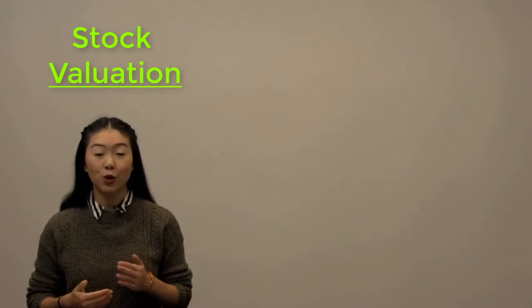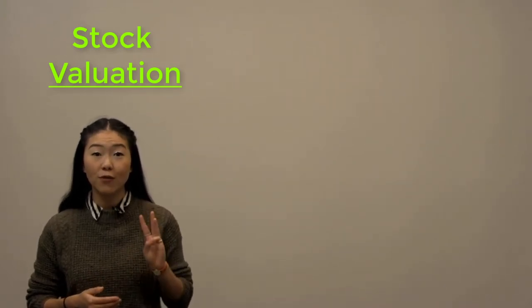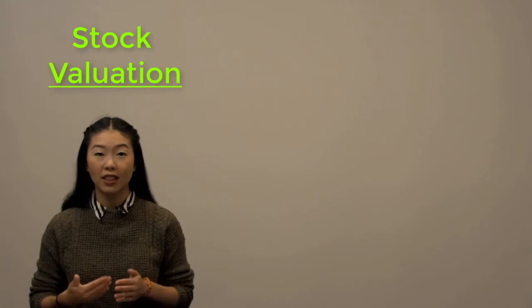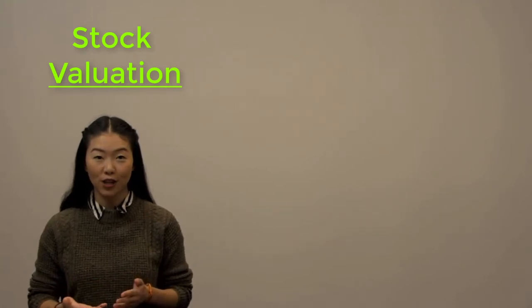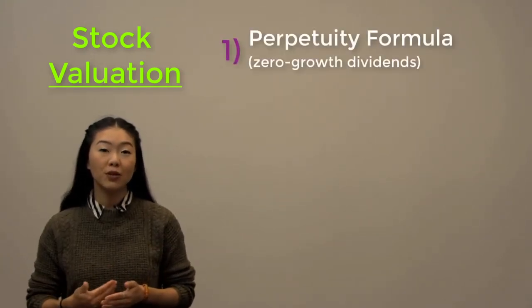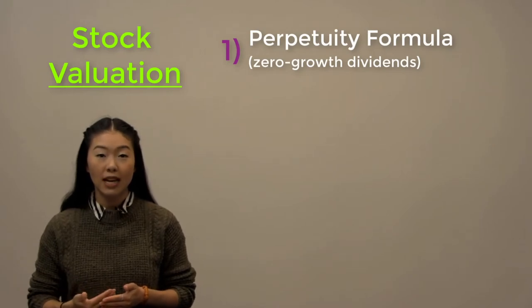Over the course of the next four videos, we will be learning about three different approaches on how to calculate the price of a stock. First, we will be using the perpetuity formula to calculate the price of stocks with zero growth dividends.